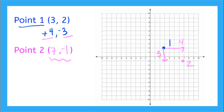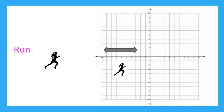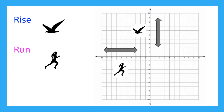Now I'm going to teach you the vocabulary for these changes. When we look at the distance between two different x-coordinates, it's called the run. And when we look at the distance between two different y-coordinates, it's called the rise.